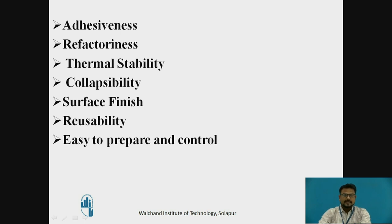The next property is adhesiveness — the property by which sand particles adhere to the mould box surface and to neighboring particles. Next is refractoriness — the property by which the sand does not fuse when it comes in contact with molten metal. Another property is thermal stability: foundry sand must retain its dimensions under high-temperature conditions. Collapsibility means that after solidification of the molten metal, the mould must be easily collapsible. Surface finish means a good sand must impart a fine surface finish to the metal casting. Finally, reusability means foundry sand must be reusable after reconditioning, and it must be easy to prepare and control with other ingredients.